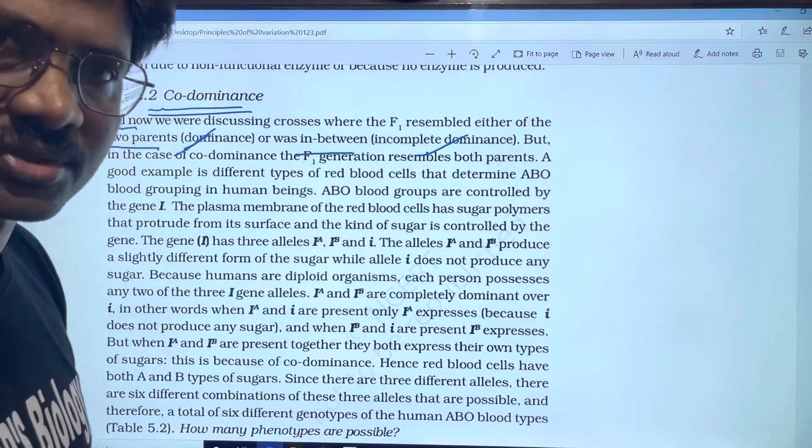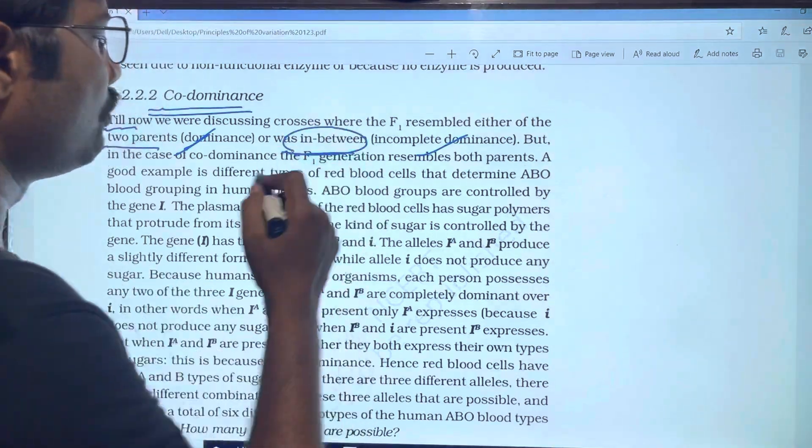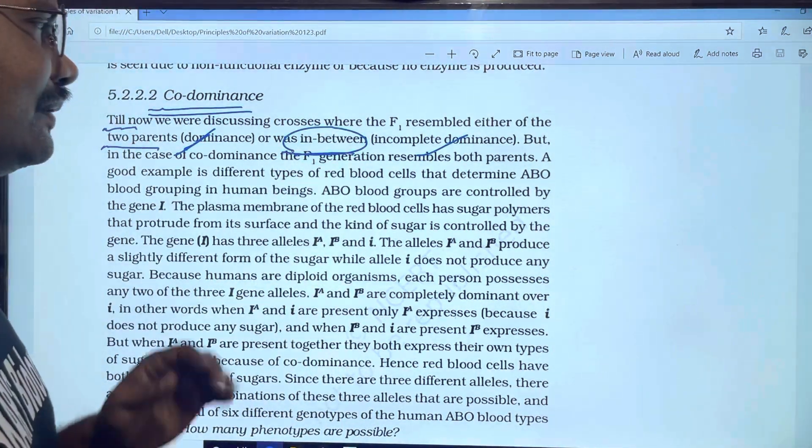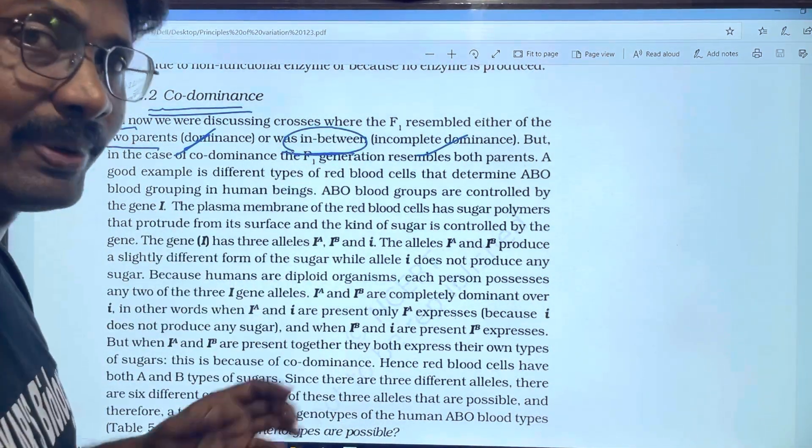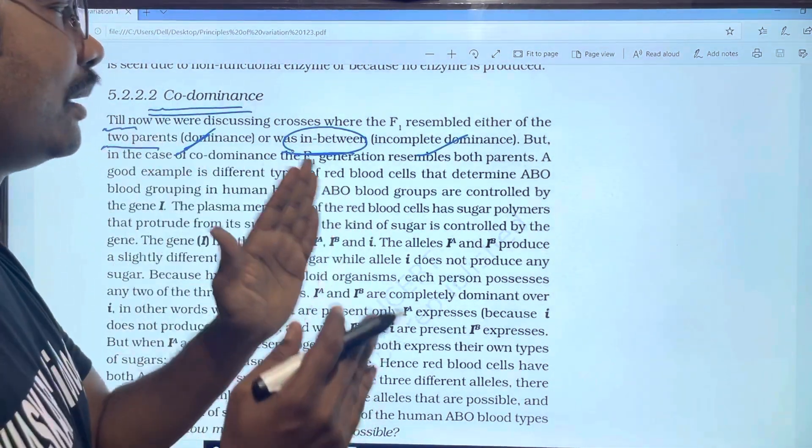Incomplete dominance: to cross a dwarf and a tall plant, F1 generation shows in-between character. Dominant white color and red color cross gives pink color - incomplete dominance.